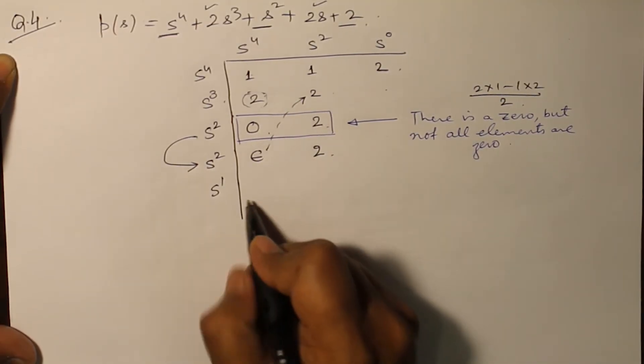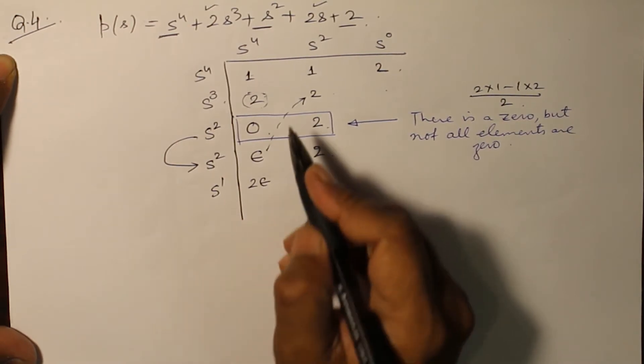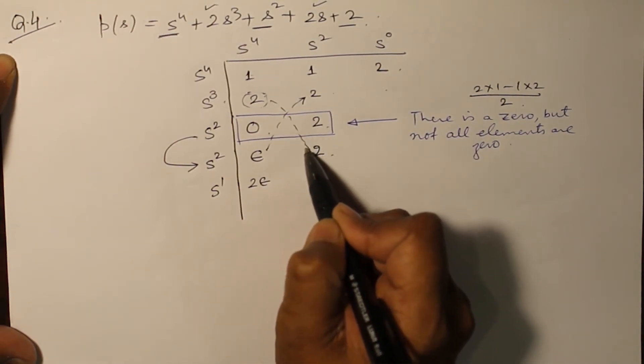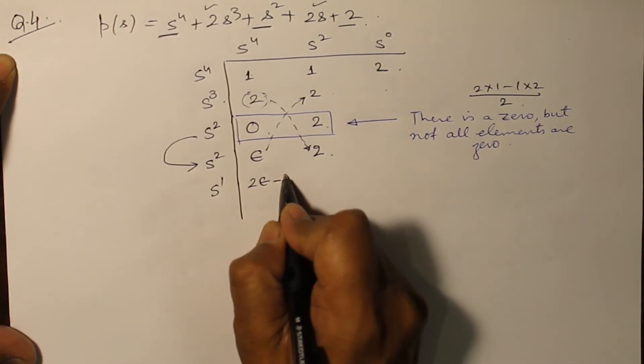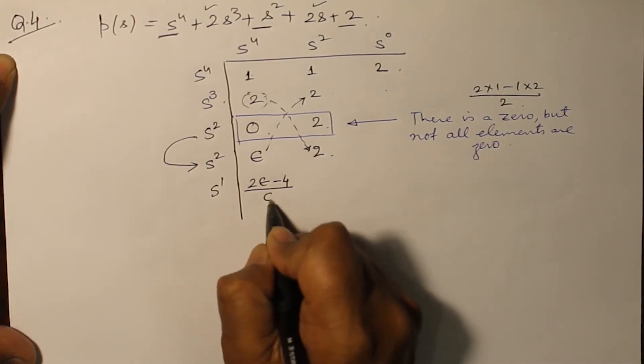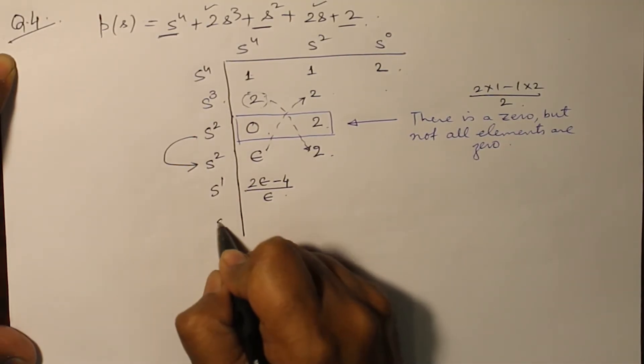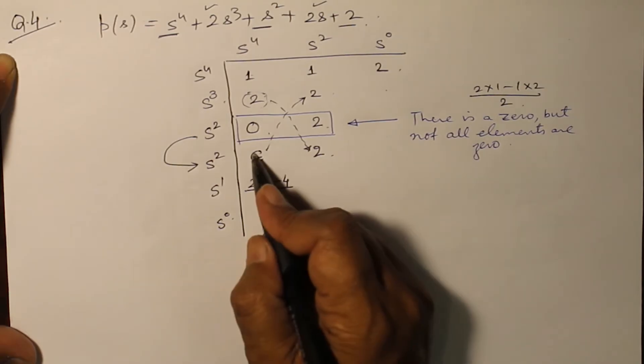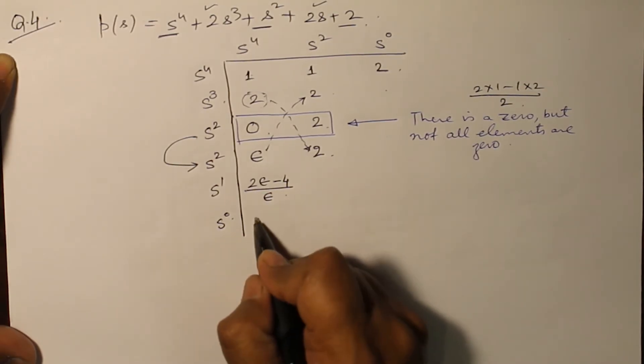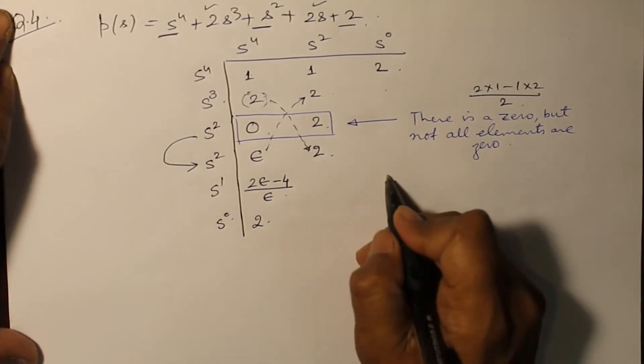Next one: 2 into epsilon minus 2 into 2, that is 4, divided by epsilon. And the last one will be this times this minus this over this, that gives you 2. Now just find out the sign of this term.